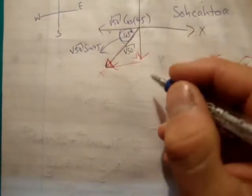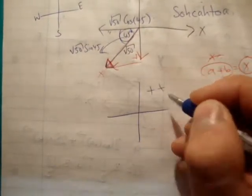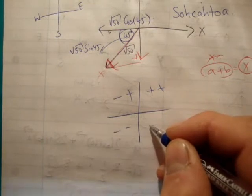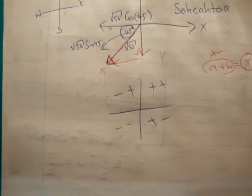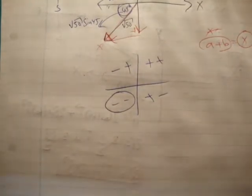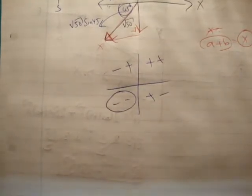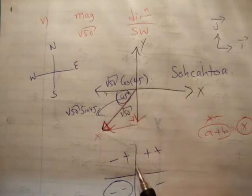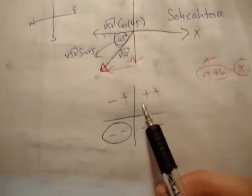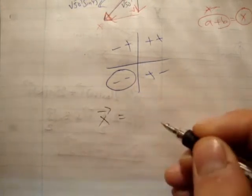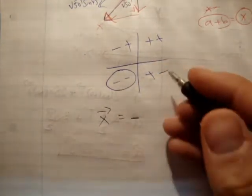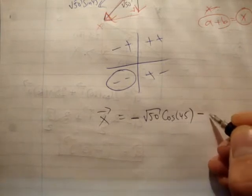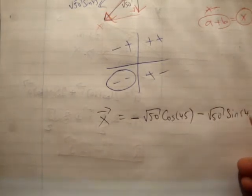It's time to get the signs right. Here i and j are both plus. Here i is negative, j is positive. Here both are negative. Here i is positive, j is negative. We are in this quadrant here, so both are negative. We know the magnitude is 50 cos 45 in the i direction and 50 sine 45 in the j direction. We're going to call the vector x is equal to minus root 50 times the cosine of 45 minus root 50 times the sine of 45.